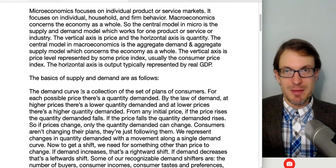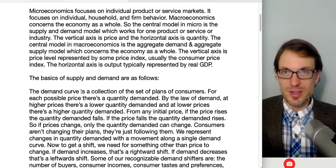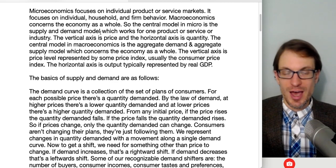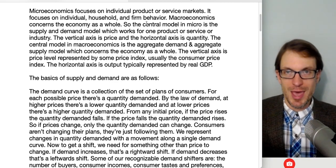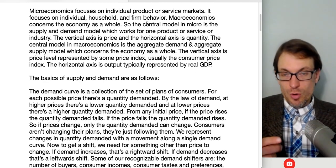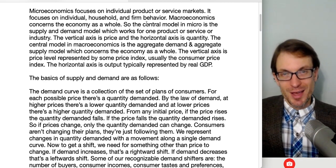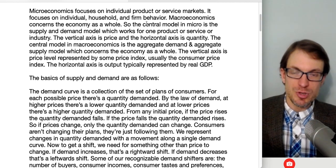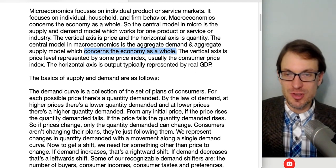In terms of the distinction between microeconomics and macroeconomics: microeconomics focuses on individual product or service markets — a single product, single service, or decisions made by one entity like an individual, household, or firm. Macroeconomics focuses on the economy as a whole. The central model in microeconomics is the supply and demand model, where the vertical axis is the price of that good and the horizontal axis is the quantity. In macroeconomics, the central model is the aggregate demand and aggregate supply model, which focuses on the economy as a whole — not just a single product or service, but all of them together.